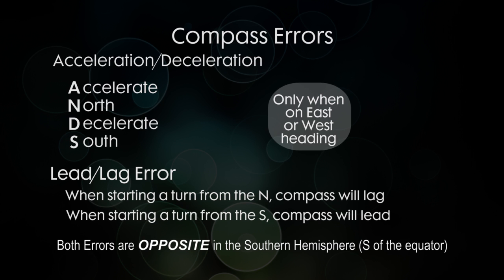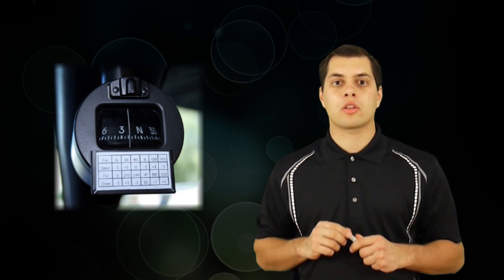Now there is another thing that happens to a compass, and that is interference. Believe it or not, all the instruments and the engine and everything inside the airplane has a magnetic field, and so the compass will be off just by a little bit. So when you see a compass in most of the airplanes, underneath the compass, you'll see a little compass correction card, and that'll tell you how far off the compass is. And that brings up another good point.